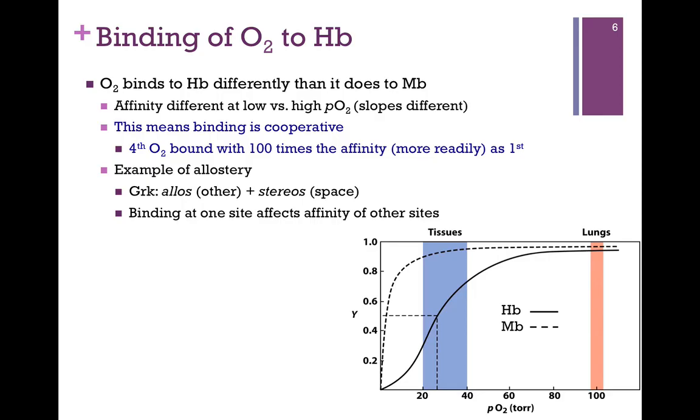This is an example of what's called allostery. Allos means other. In other words, the binding at one site affects the affinity of an adjacent site. And we'll see more of what this means in the next video.